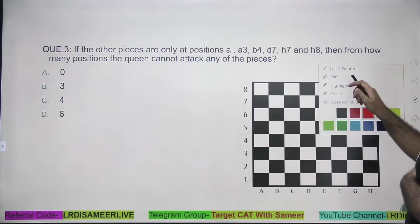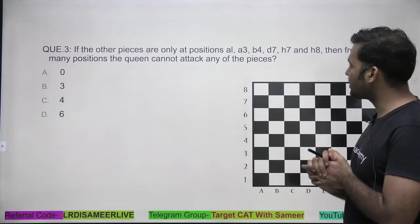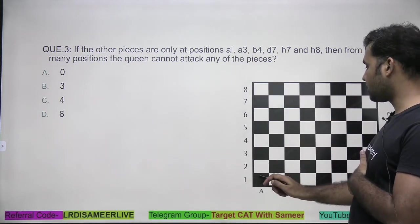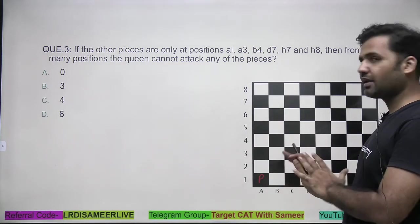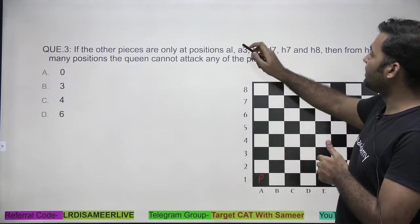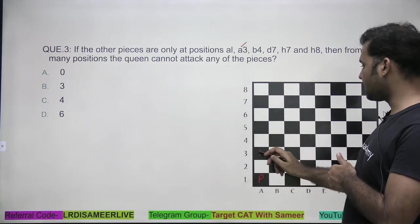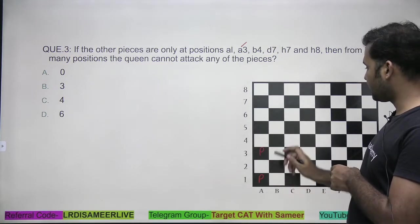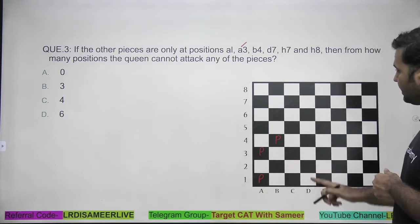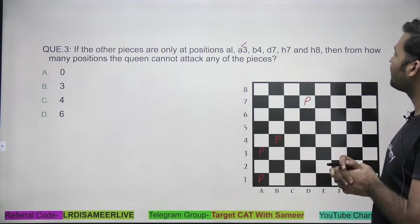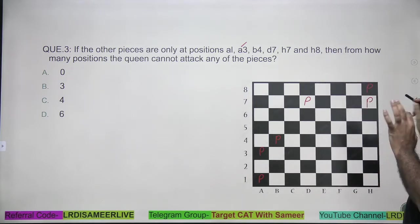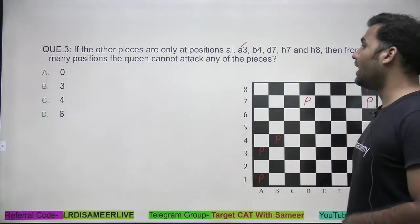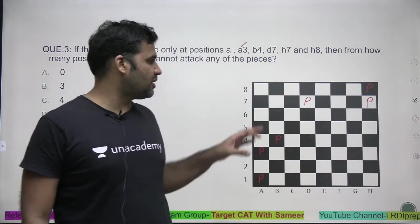This is an interesting question. Let's look at the positions of all of these. Let's first identify what these positions are — a1, a3, b4, d7, h7, and h8. I'm placing pieces at each of these positions on the board, marking them with 'P'. So pieces are present at a1, a3, b4, d7, h7, and h8.